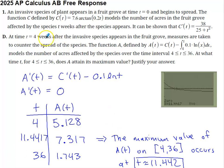And then the last part of this says that four weeks after the invasive species appears in the fruit grove, measures are taken to try to counter the spread of the species. The function A defined by C of T minus this integral, notice where the T value is within the integral, it's the upper limit of integration, models the number of acres affected by the species over the time interval from 4 to 36. At what time on that interval, including the endpoints, does A attain its maximum value? Justify your answer.